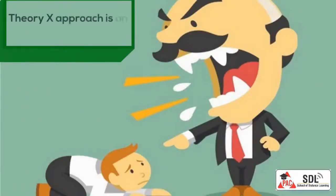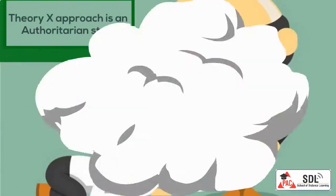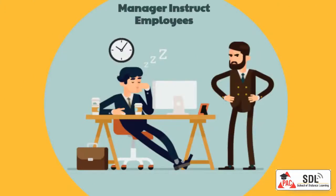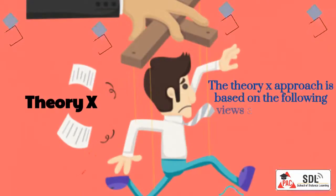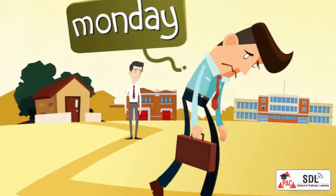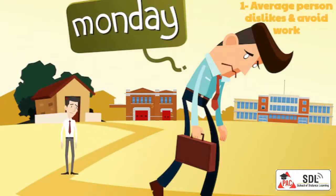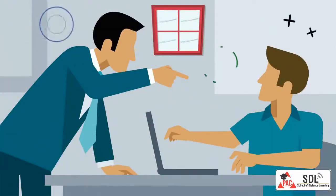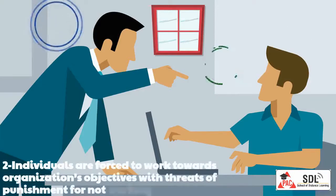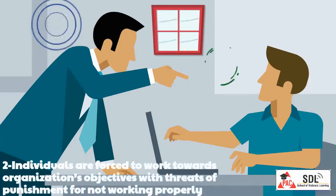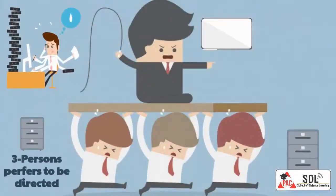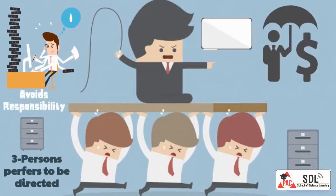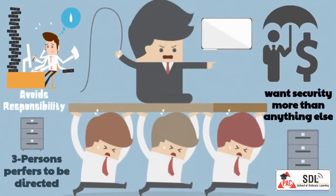Theory X approach is an authoritarian style where the manager instructs his employees and tells them what to do. The Theory X approach is based on the following views about people at work: 1. The average person dislikes and avoids work. 2. Individuals are forced to work towards organizations' objectives with threats of punishment for not working properly. 3. Persons prefer to be directed, want to avoid responsibility, have no ambitions, and want security more than anything else.